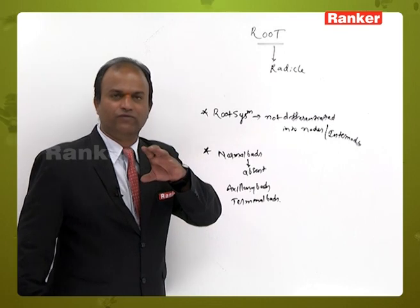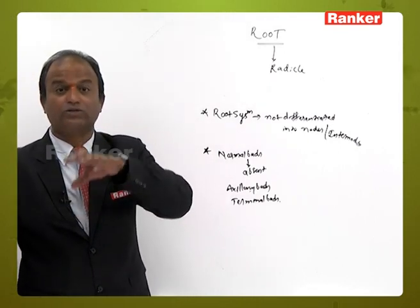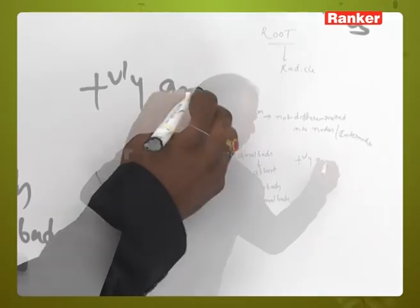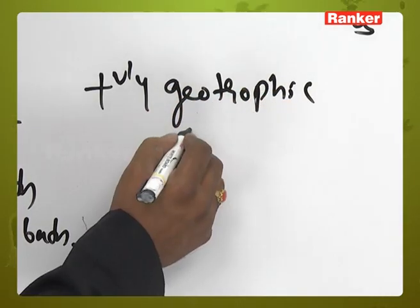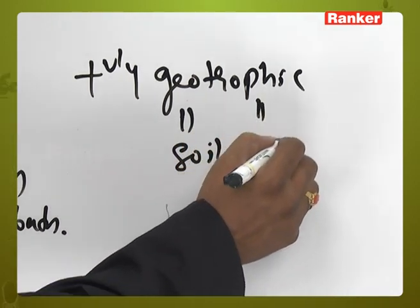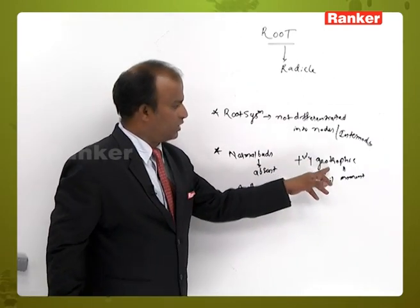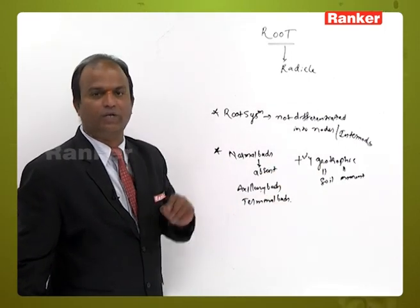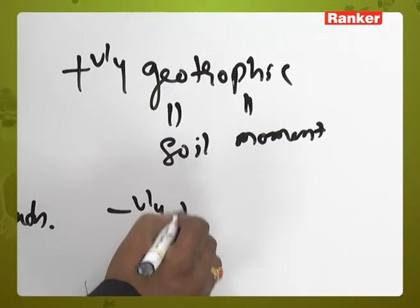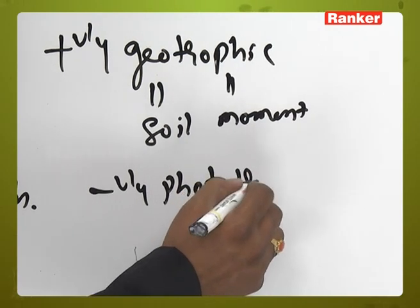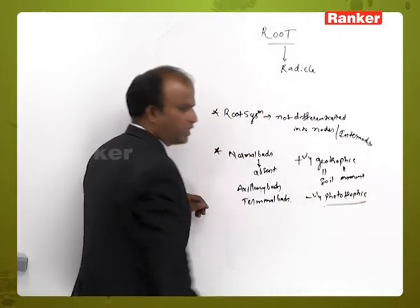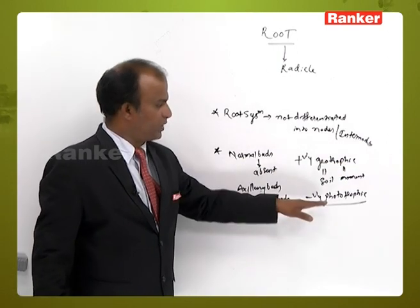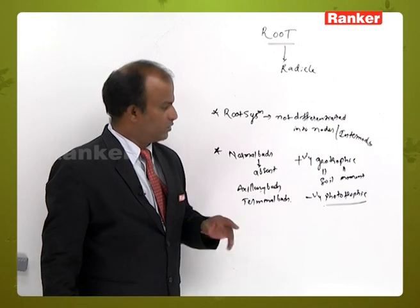Whether the root system is growing positively phototropic or positively geotropic — it always grows positively geotropic. 'Geo' means soil, 'tropic' means movement, so the movement of the root towards the soil is positively geotropic. It is also called as negatively phototropic, since roots always grow towards the soil and away from light.